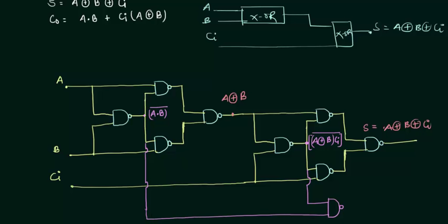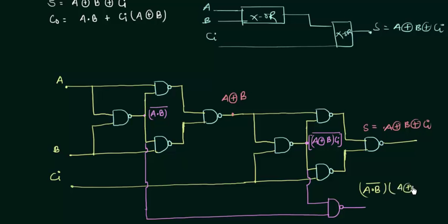This point and this point will go to a NAND gate, and let's see what is the output. The output will be: A AND B, and A XOR B AND CI — and then its complement. So the complement of (A AND B) AND (A XOR B AND CI).